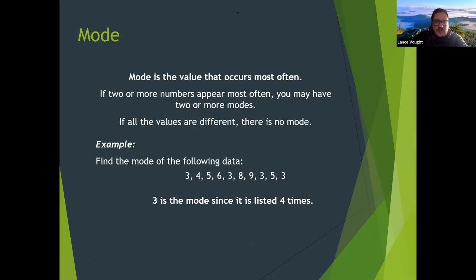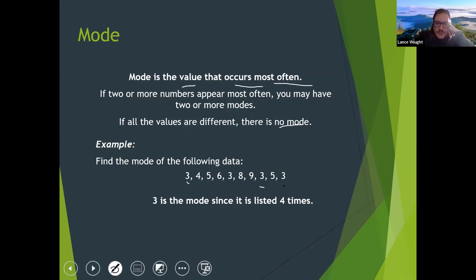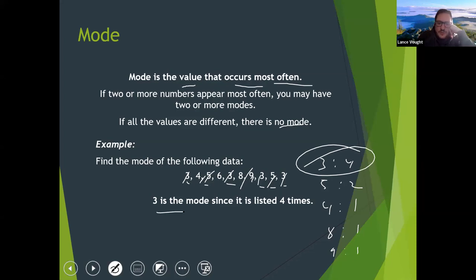Mode is the value that occurs most often in your data set. If you have all different numbers then there is no mode — like the salary example had no mode. In this example, three occurs four times, five occurs twice, four occurs once, eight occurs once, and nine occurs once. Since three was observed the most times, three is the mode.